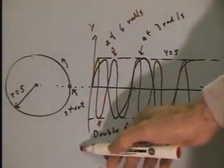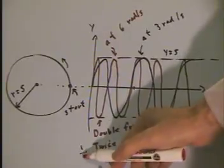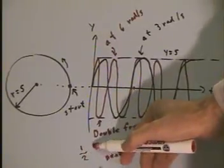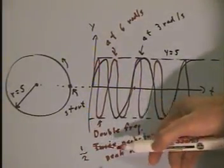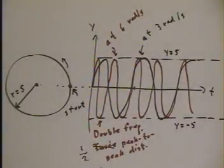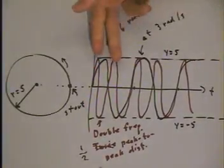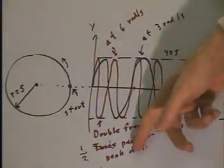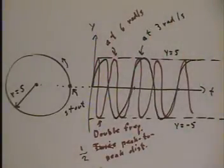Now, it's going to be difficult for me to write this on a moving target from this angle. But it's clear that we have half of the peak-to-peak distance. So, when we double the frequency, we get half the distance between peaks.